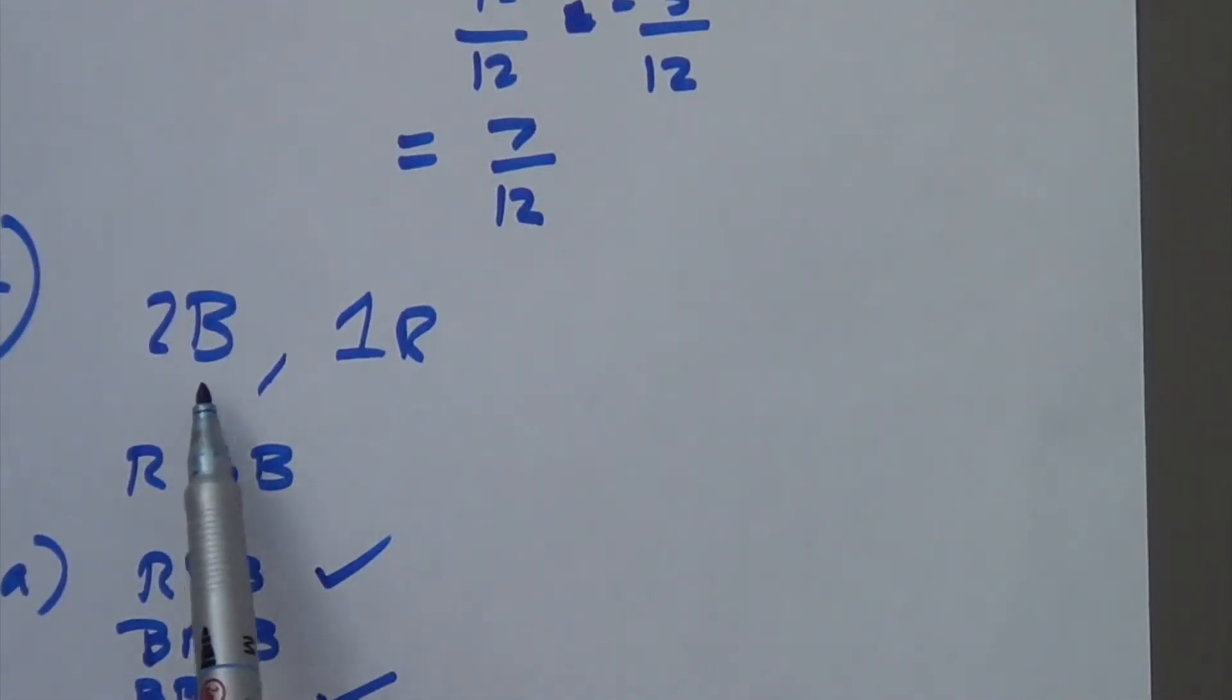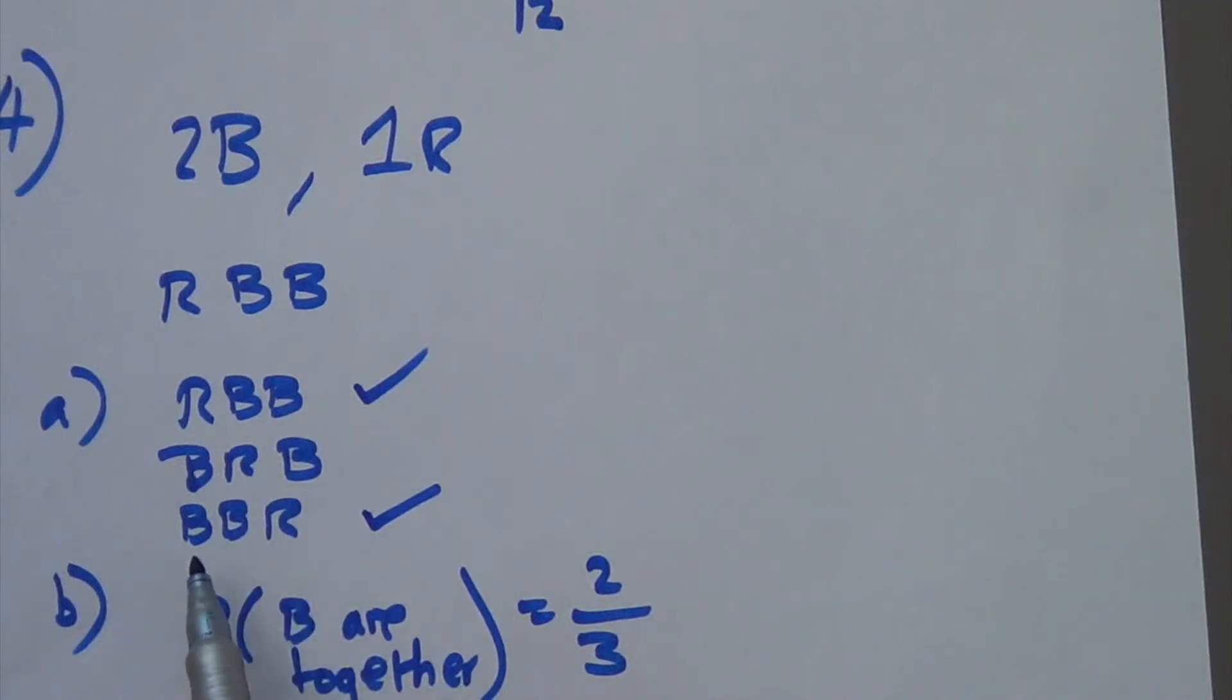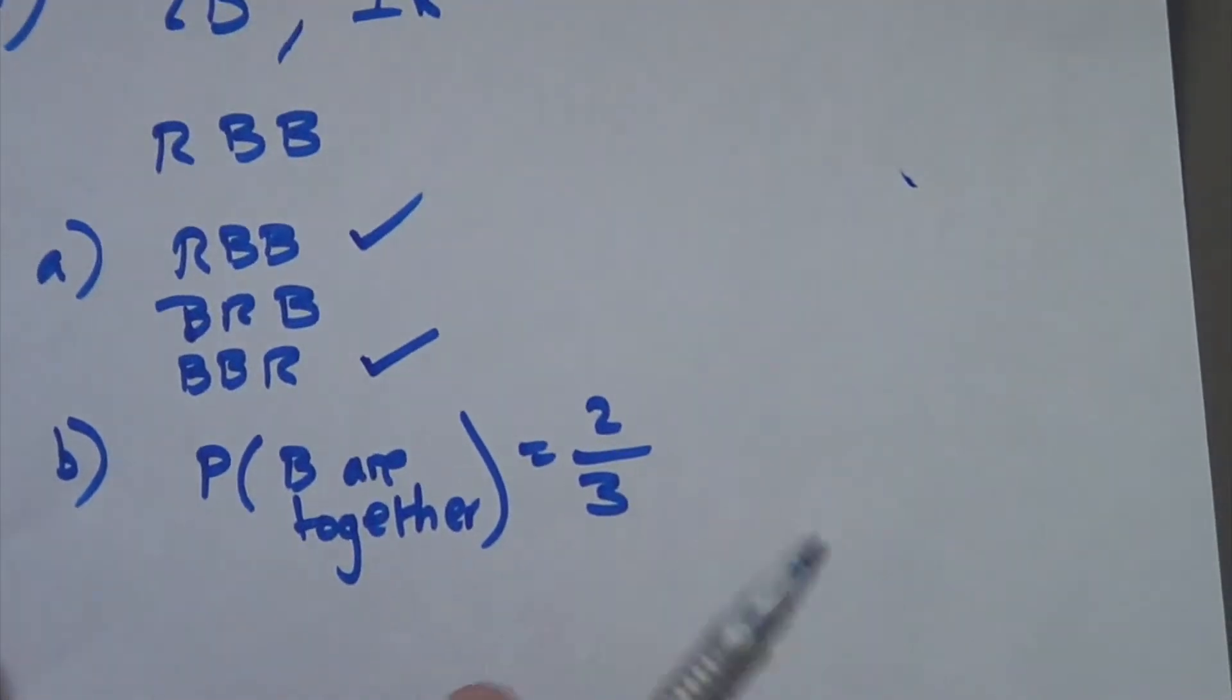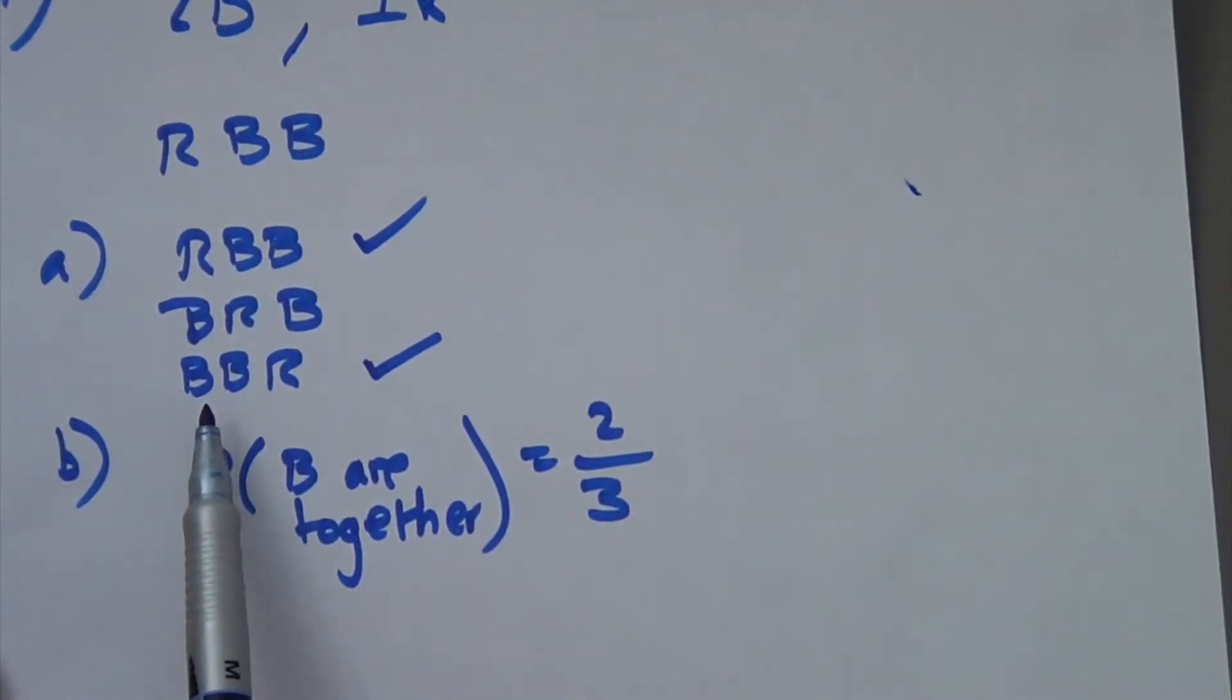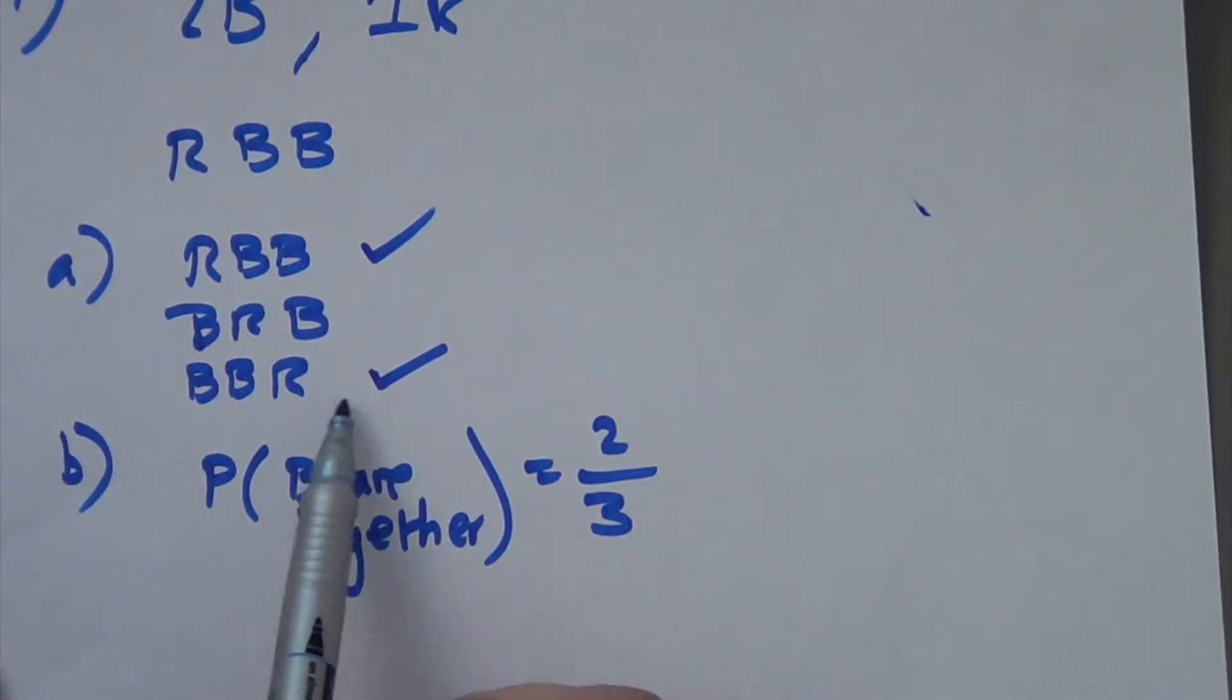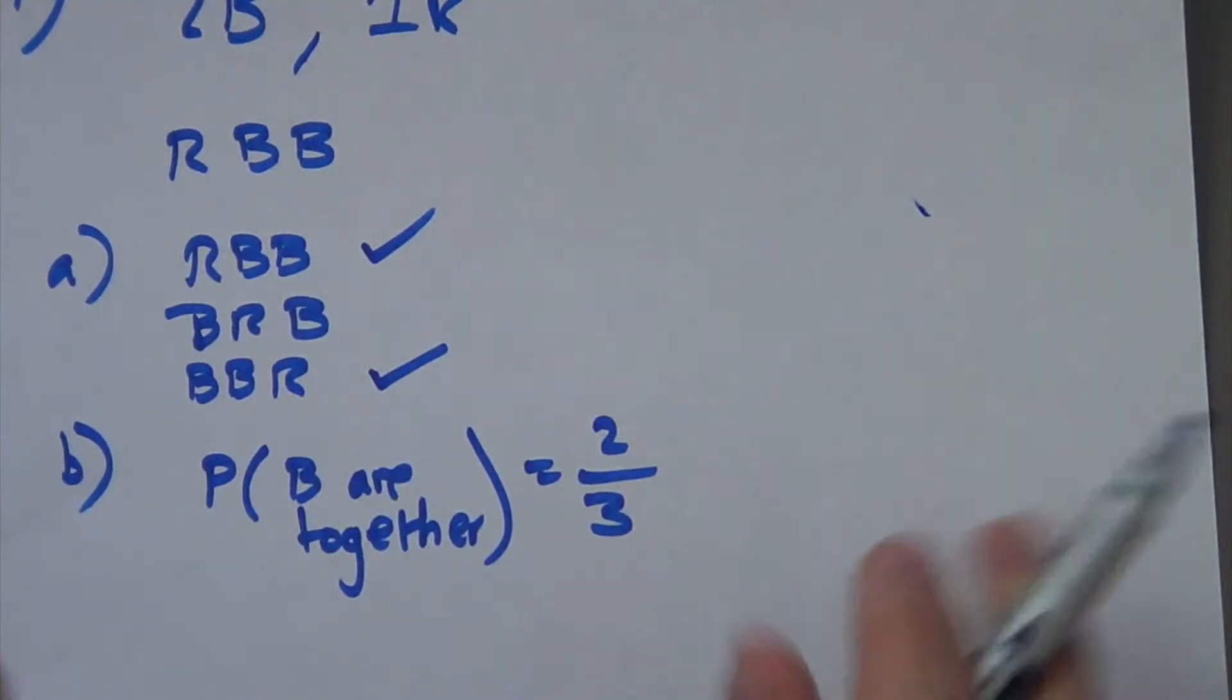Right, next question. This person has two black cards and one red card and basically asks us to list all the possibilities of placing the cards down. So, we've got red, black, black. We have black, red, black. We have black, black, red. So, that's the answer to that question. Next bit, it asks us what's the probability that all the blacks are placed next to each other? So, we can see here with a tick, there's one possibility there and the one at the bottom. So, the probability that both blacks are together is going to be 2 out of the 3 possibilities. 2 out of 3.